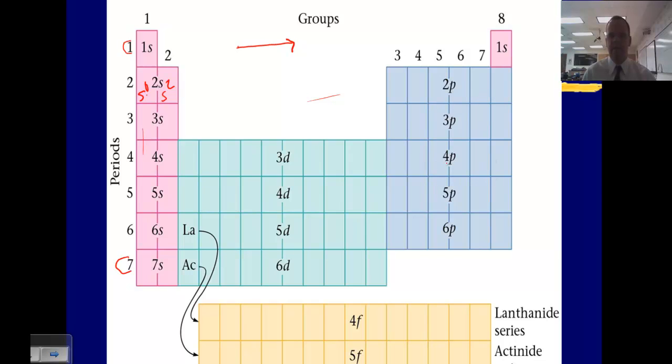The p columns here are 6 columns, because the p orbitals can hold 6 electrons, and they're 3 orbitals.